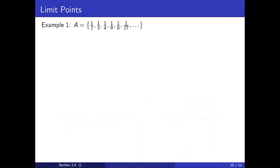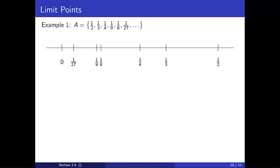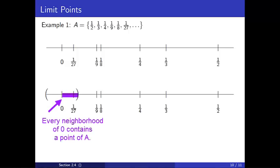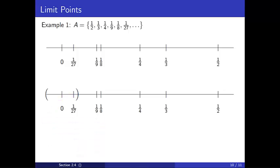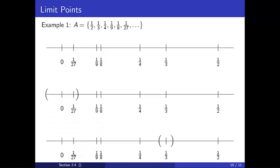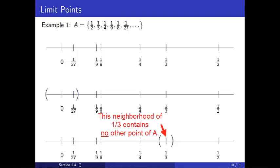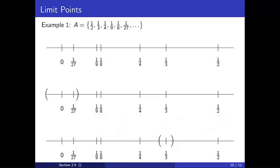Our first example was the set {1/2, 1/3, 1/4, 1/9, 1/8, 1/27, ...}. Let's plot these points on a number line. We see that every epsilon neighborhood of 0 will contain a point in A. Hence 0 is a limit point of A. On the other hand, if we zoom in on any point in A — say 1/3 — it's possible to find one epsilon neighborhood of 1/3 containing no other point of A. Therefore 1/3 is isolated, and similarly every point in A is an isolated point.